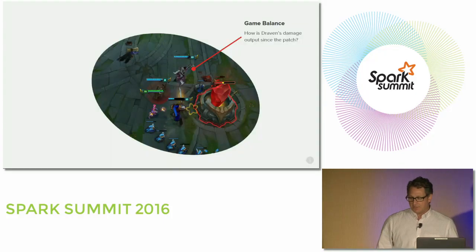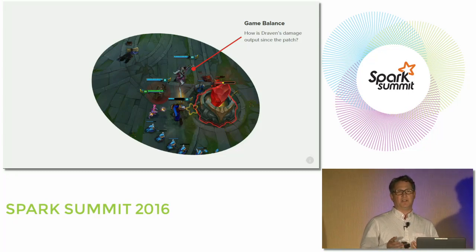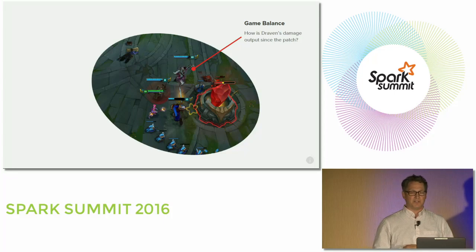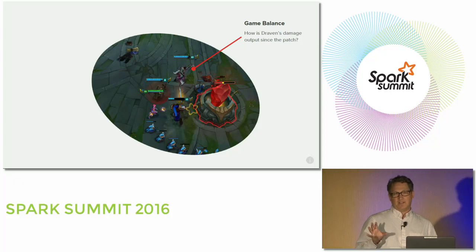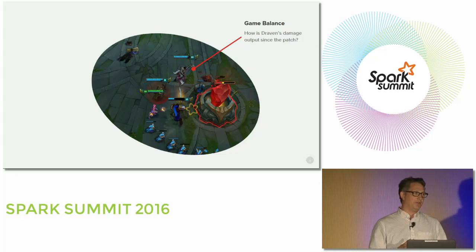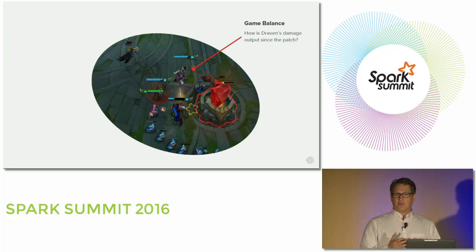The idea of this presentation is to go through some of the interesting questions we can ask with our data and how we've been leveraging Spark to solve those problems. To do that, I'm going to use an in-game screenshot. This is taking place near the end of a game where a team is already in an enemy's base, starting to take down their defenses. We have this champion, Draven, who at this point in the game is responsible for the majority of the damage output from his whole team combined. So, is this player really good or is the champion itself unbalanced and overpowered, as it would be called in gaming terms?